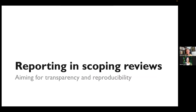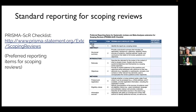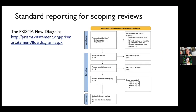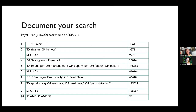Scoping reviews have a very standardized reporting process. PRISMA has a checklist of all the pieces of information you are supposed to report when you do a scoping review. They also have what's called the PRISMA flow diagram, where you document how many studies were included and excluded at the various parts of the project. This is a very standard form of reporting for scoping reviews and really lends a lot of transparency and reproducibility to the project. It's important to document the search strings as well, for transparency and reproducibility.